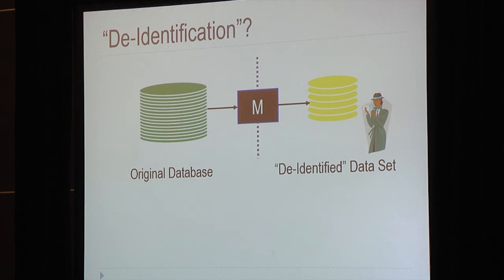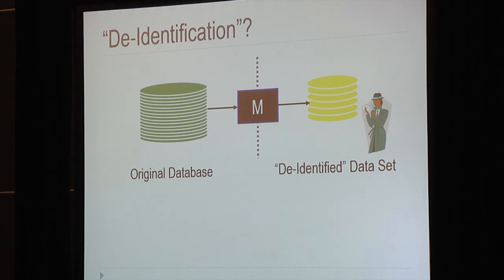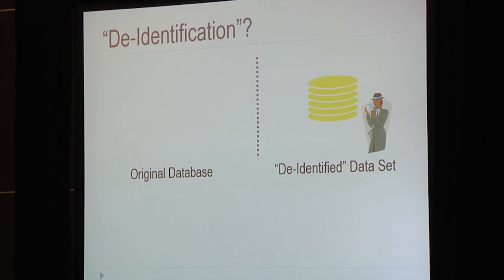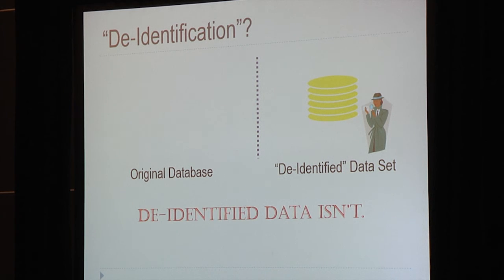I am not going to be talking today about so-called de-identification or anonymization — this mythical process in which an original database is sanitized by an intermediary who releases a de-identified data set, after which the original database and the intermediary go away. A whole host of results teach us that de-identified data isn't — either it is no longer meaningful data, or it is not properly de-identified.